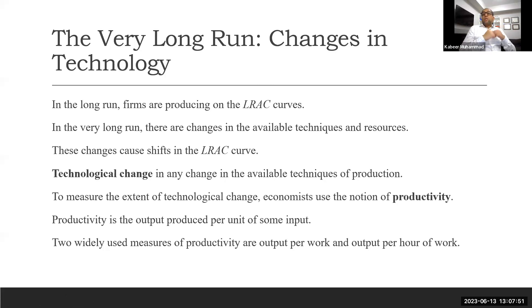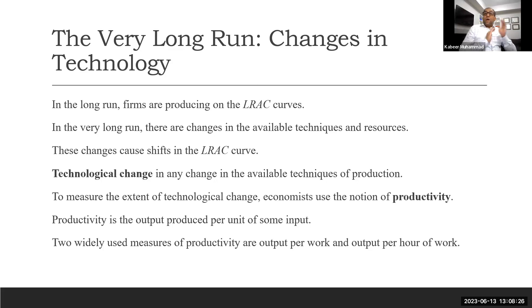In most cases, we see that new business models and new ways of doing business emerge. Technological change is any change in available techniques of production. To measure the extent of technological change, economists use the notion of productivity. Many countries are at different levels of economic development — some are advanced, some are in the middle, and some are at the lower end. One reason they differ is the level of productivity and the different ways they produce things.